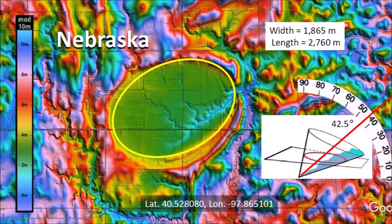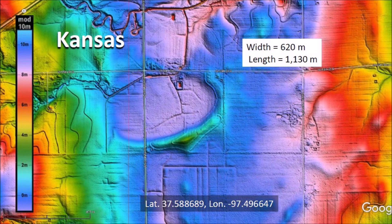The width-to-length ratio of the ellipse corresponds to a cone inclined at 42.5 degrees. This is the impact angle at which a projectile could have made a conical cavity with these width and length characteristics. This impact basin is located 17 kilometers southwest of Wichita, Kansas.